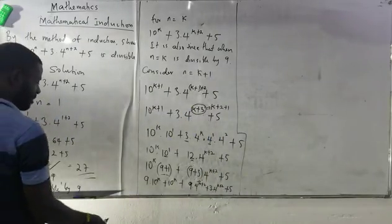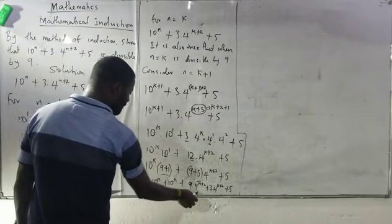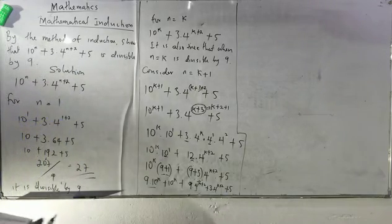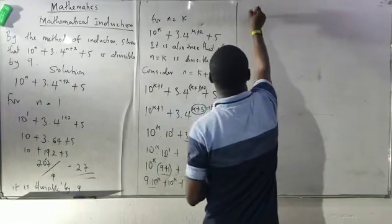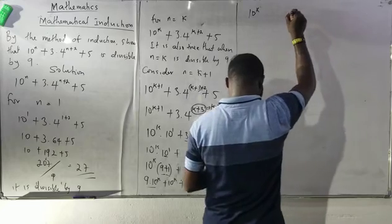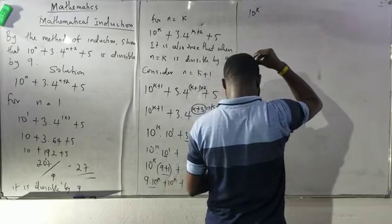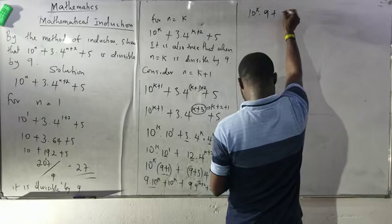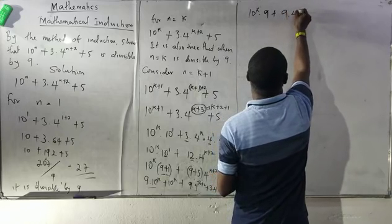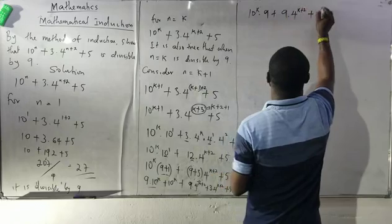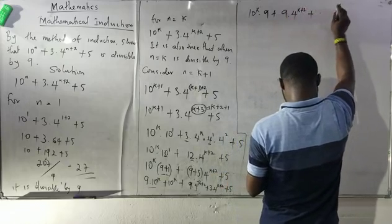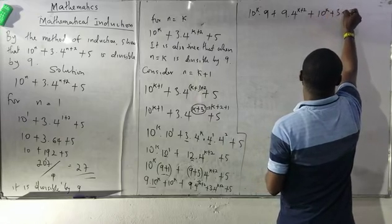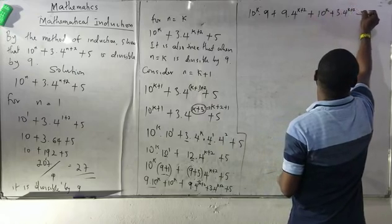Now, moving to the next step: if I consider 9 raised to the power k, I will be having 10^k dot 9, plus 9 multiplied by 4^(k+2), plus 10^k plus 3 dot 4^(k+2) plus 5.